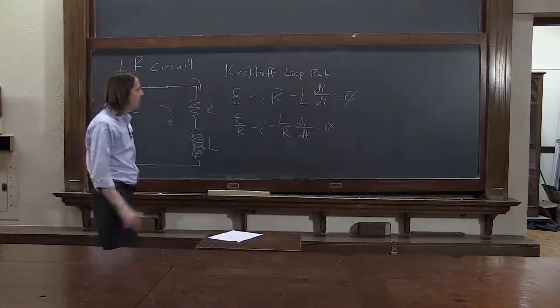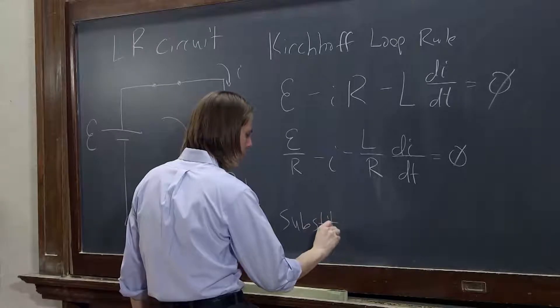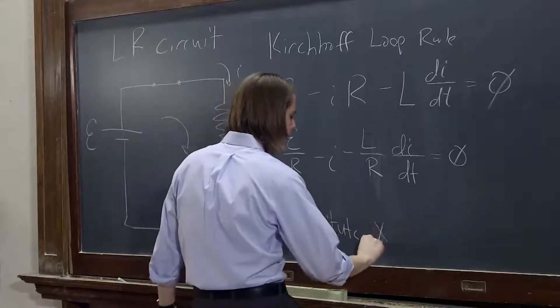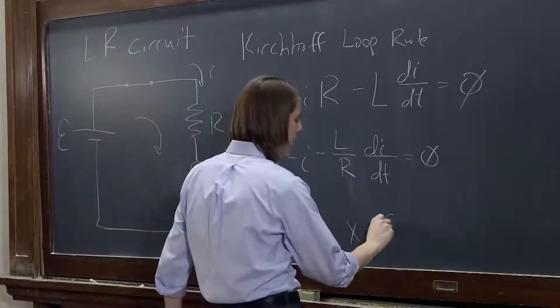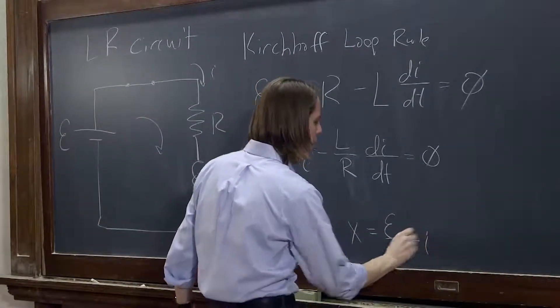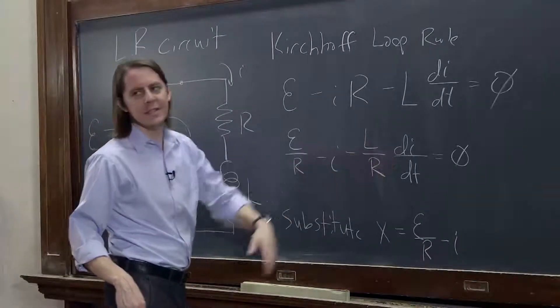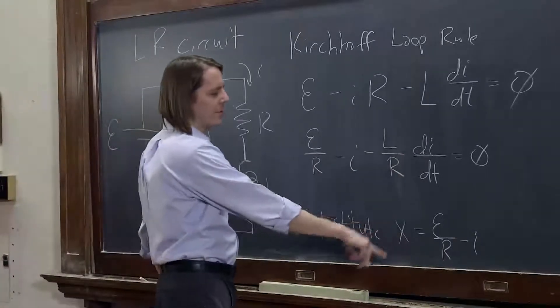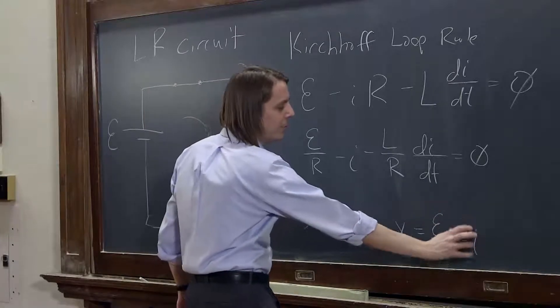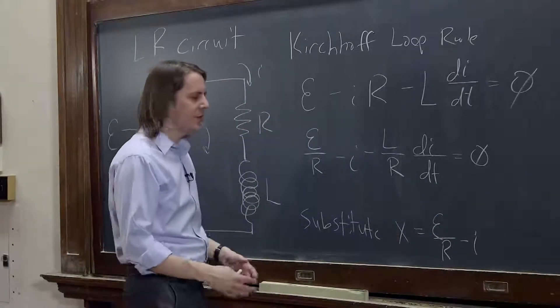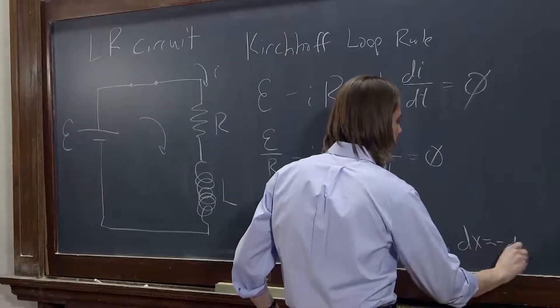Okay. So the trick in this case is to substitute x equals, and we're going to make this our variable, the EMF over R minus I. So we substitute in. That'll just become x. But then we have to deal with di dt. So when you look at this, if you were to calculate dx di, it would be minus 1. dx di, the derivative of that with respect to I is 0. Derivative of that with respect to I is minus 1. So if dx di is minus 1, then dx equals minus di.